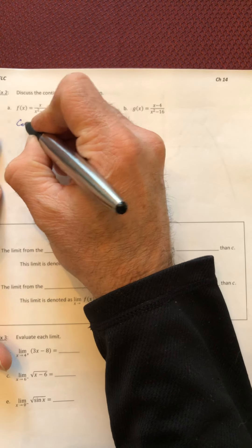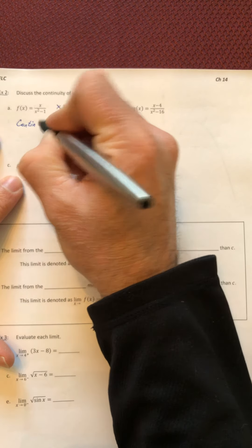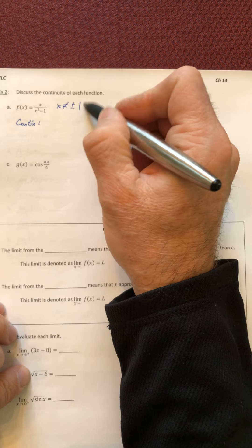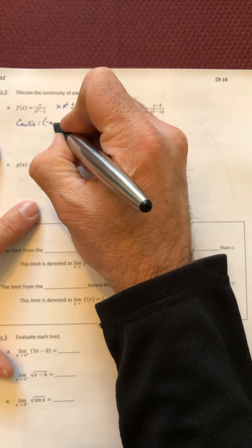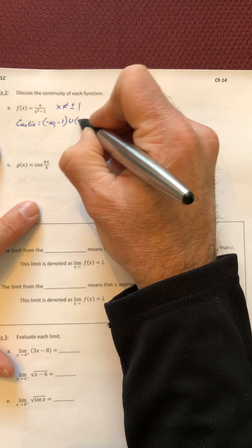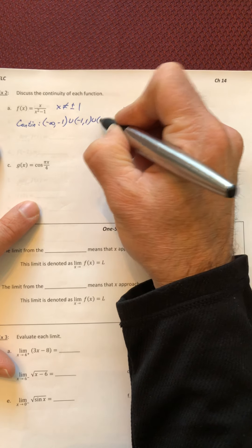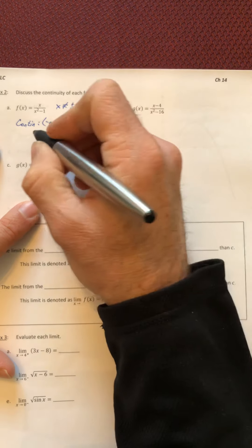So it's continuous everywhere else except for these two numbers. So negative infinity to negative one, negative one to one, and one to infinity.